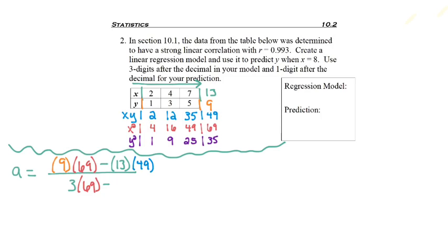Still have minus in the denominator. And now I need the sum of X's quantity squared, so I need the 13 squared, even though it's kind of above, it was squared in this case. Going straight across the top on my calculator, 9 times 69 minus 13 times 49, I get negative 16, and the same process in the denominator gives me 38. As I divide those, I get negative 0.4210, etc.